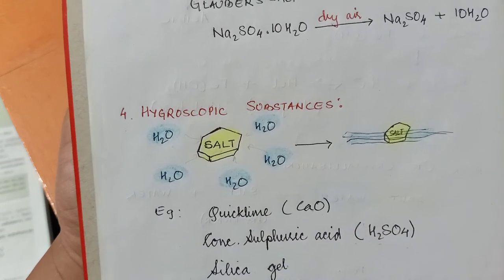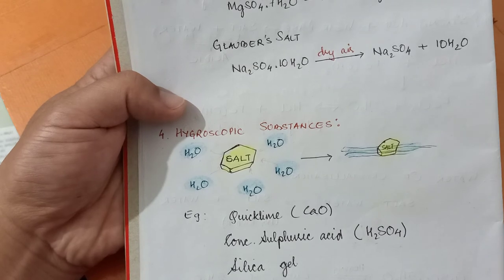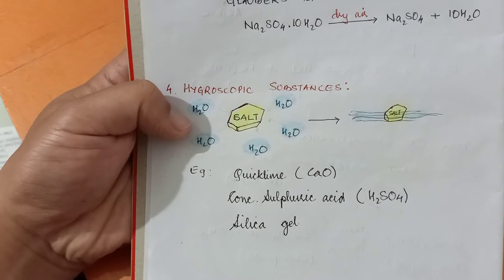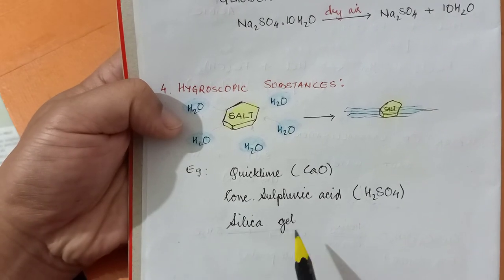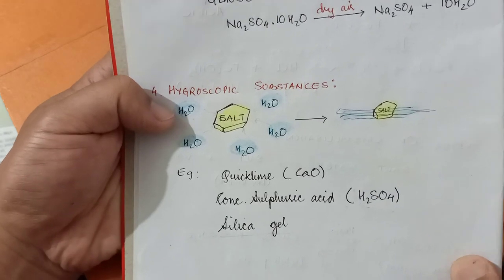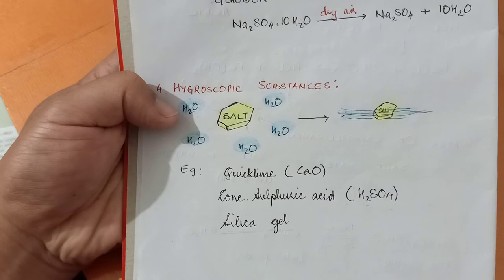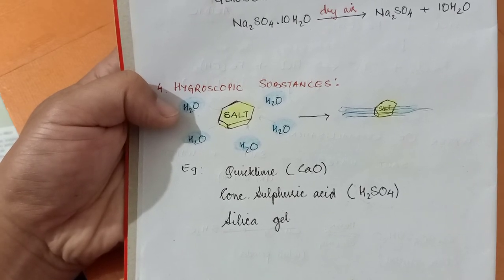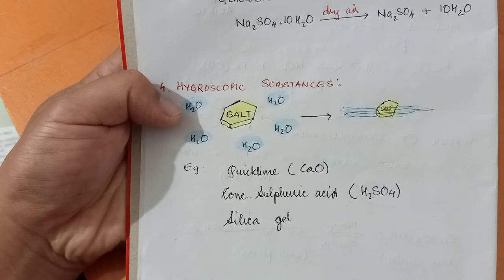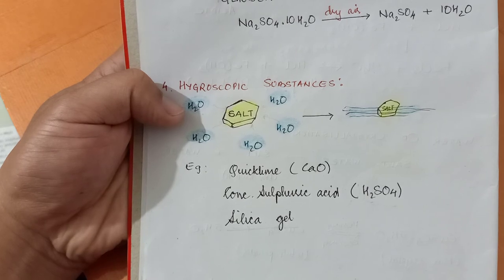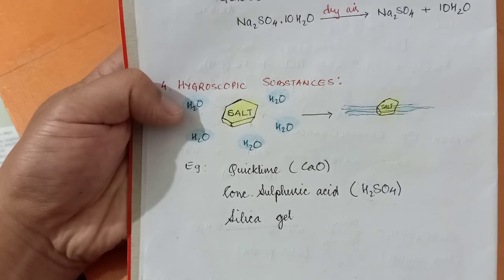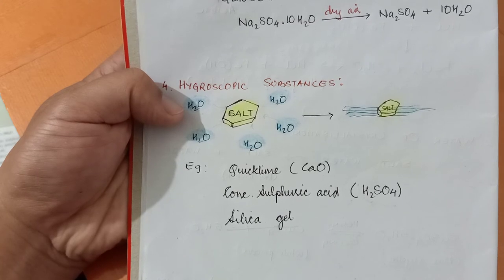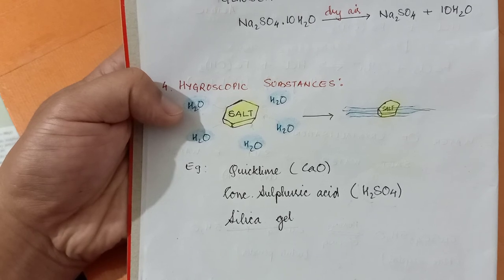Quick lime is an example of a hygroscopic substance. Silica gel is also an example and is very widely used in the fashion industry. When you buy a pair of shoes, inside you will find two small pouches containing silica gel. The manufacturers put silica gel so that it absorbs moisture present inside the shoe and keeps the pair of shoes dry.